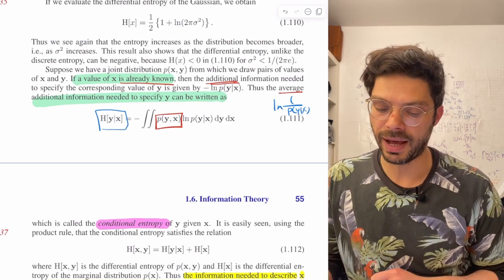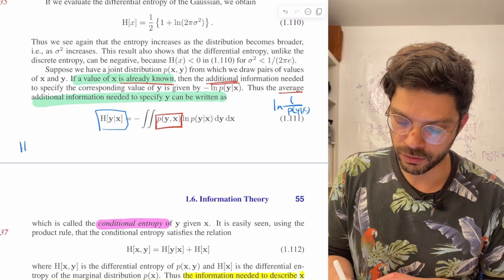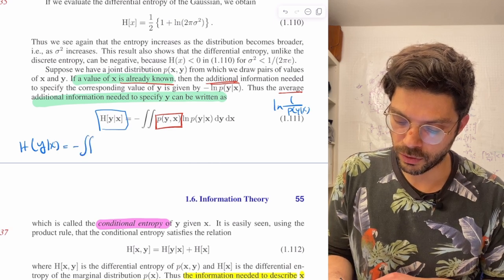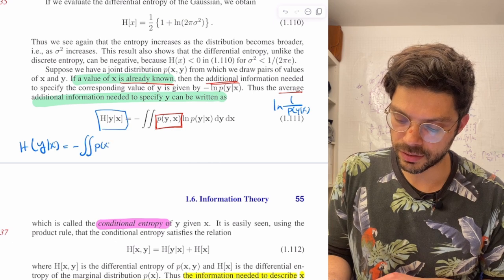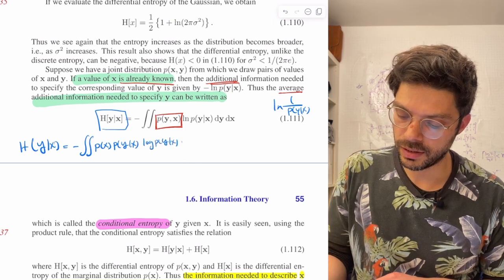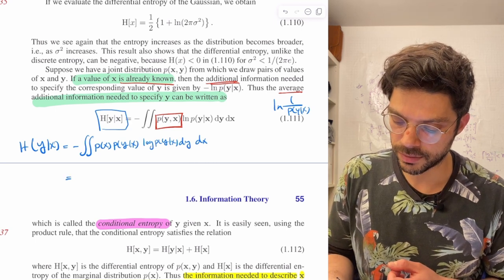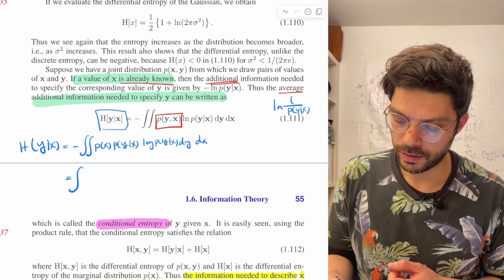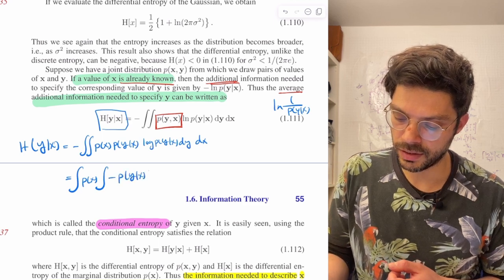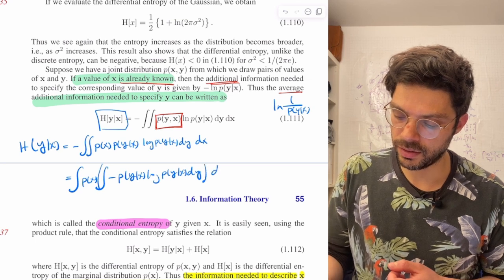Let's see what he means by it being the average additional information. The whole point of this is that if we actually expand this out, let's just do that together. So this is h of y given x equal to, I'm going to write that as p of x times p of y given x log p of y given x dy dx, and now we can just take the p of x out.